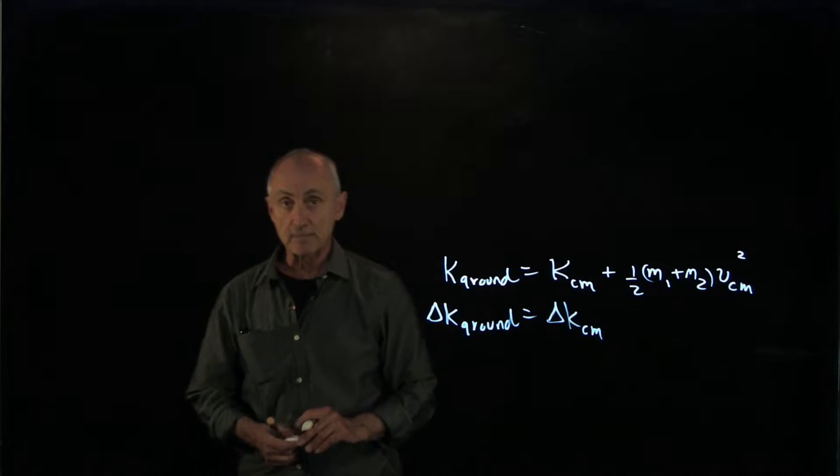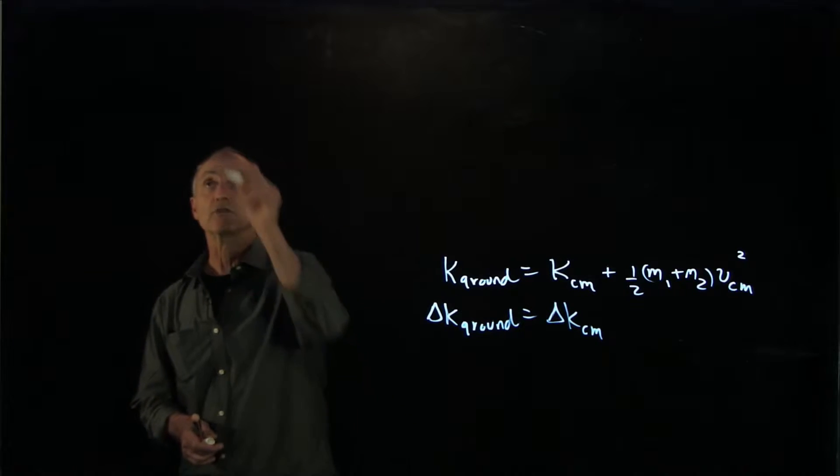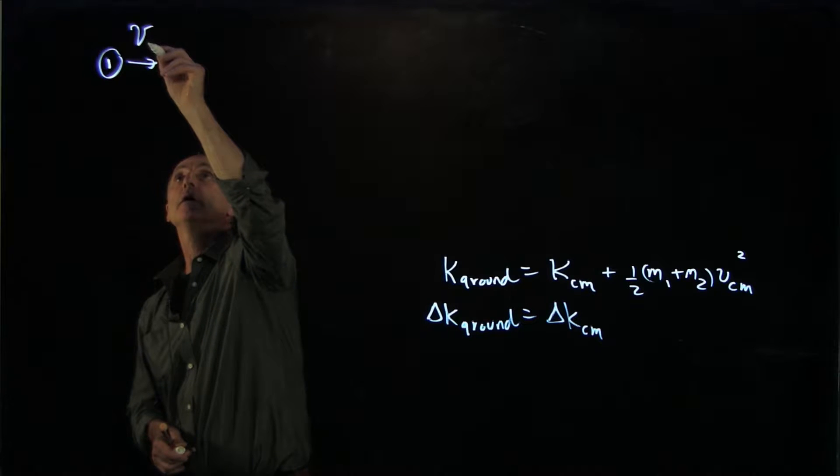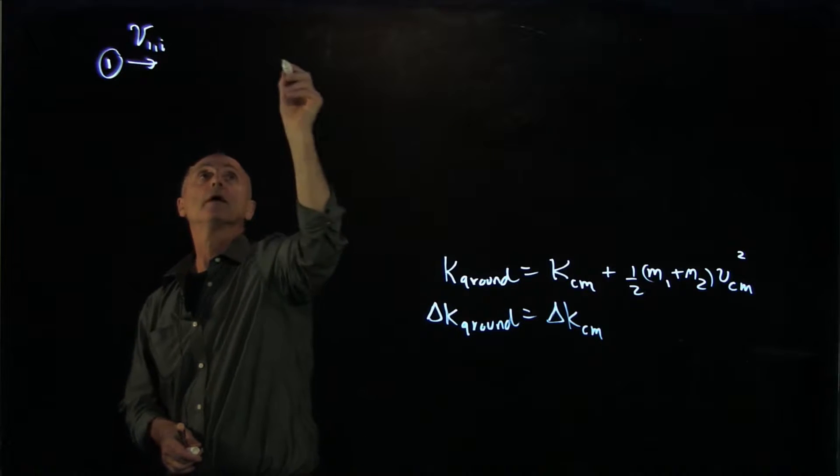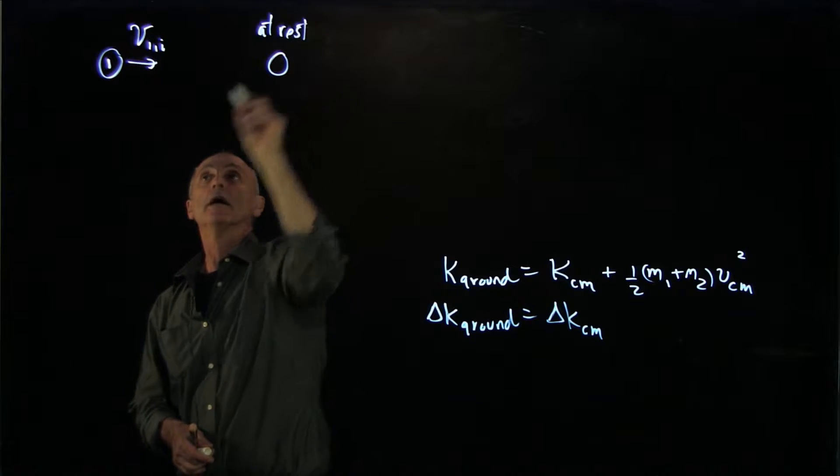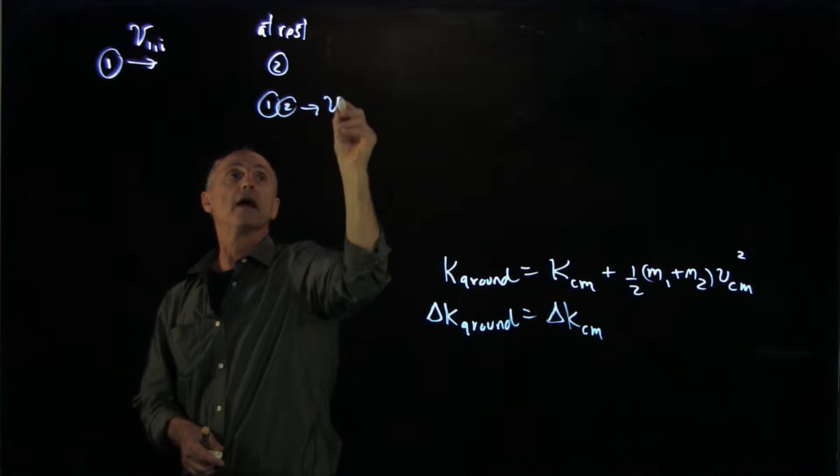Now let's look at an example of a collision that's completely inelastic. We have object 1 coming in with v1 initial, and object 2, let's make it at rest. Afterwards, object 1 and 2 stick together and they go off with the final velocity.